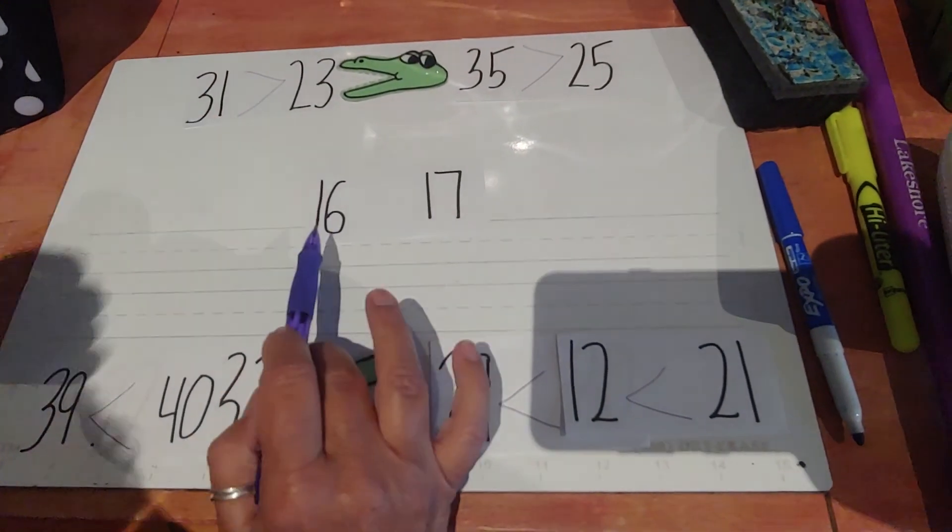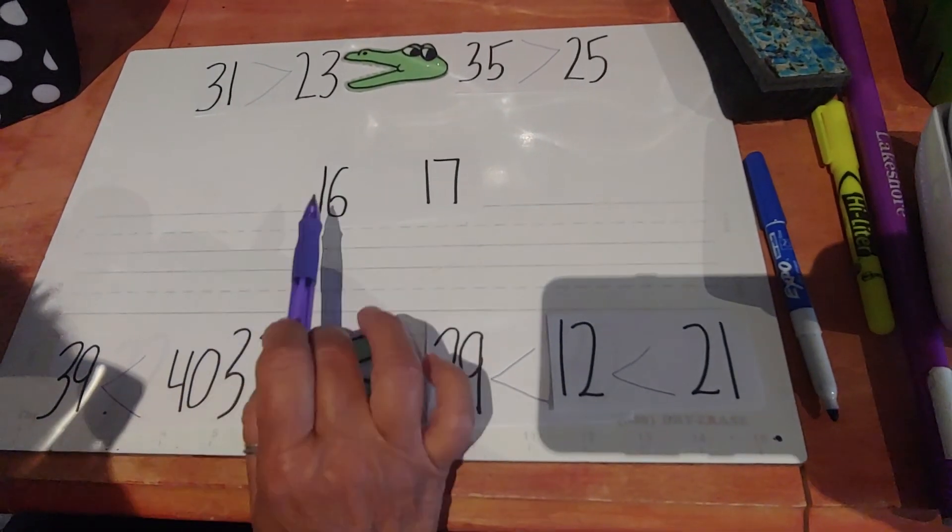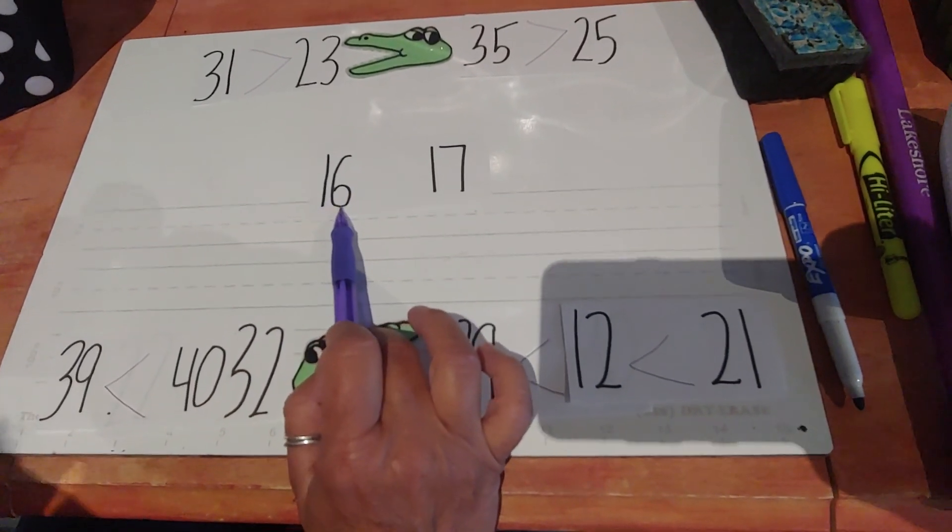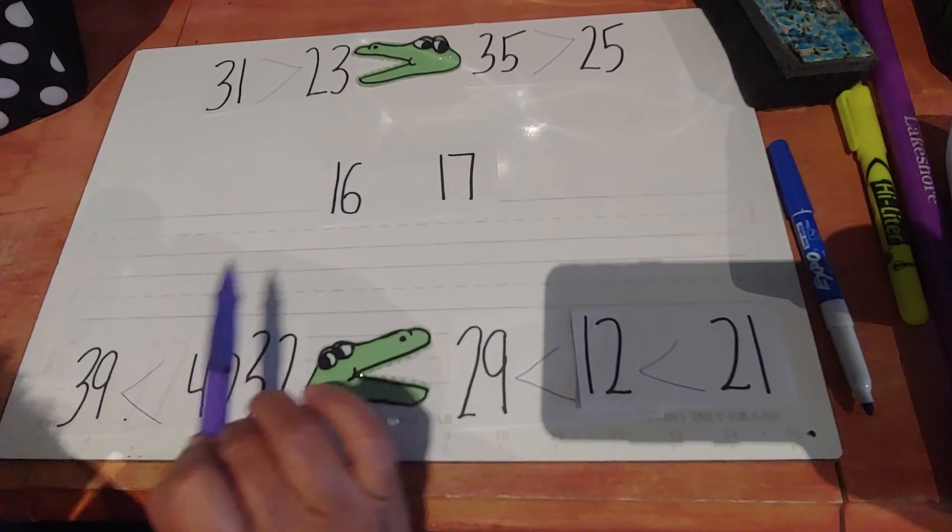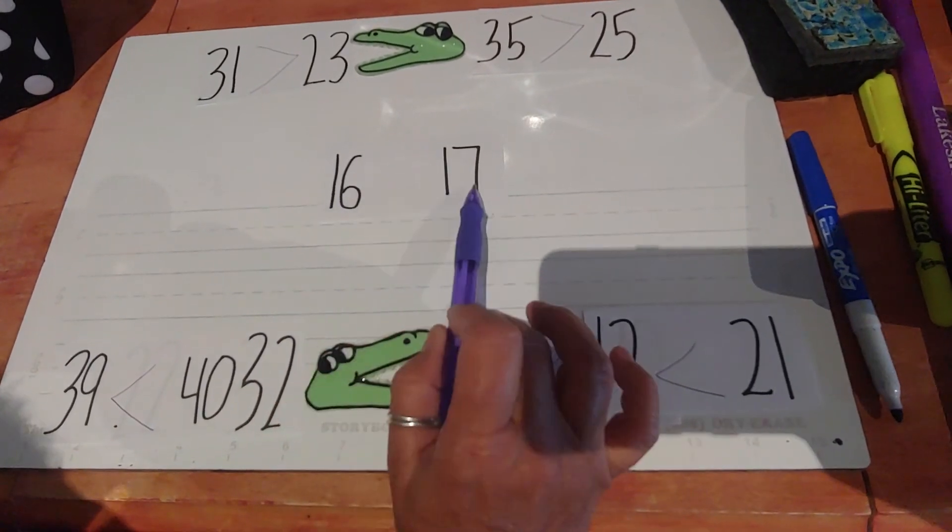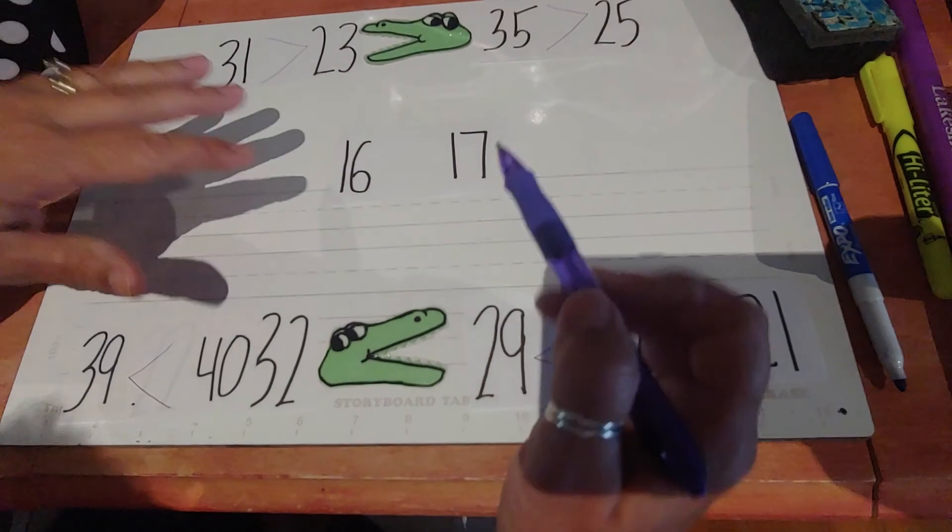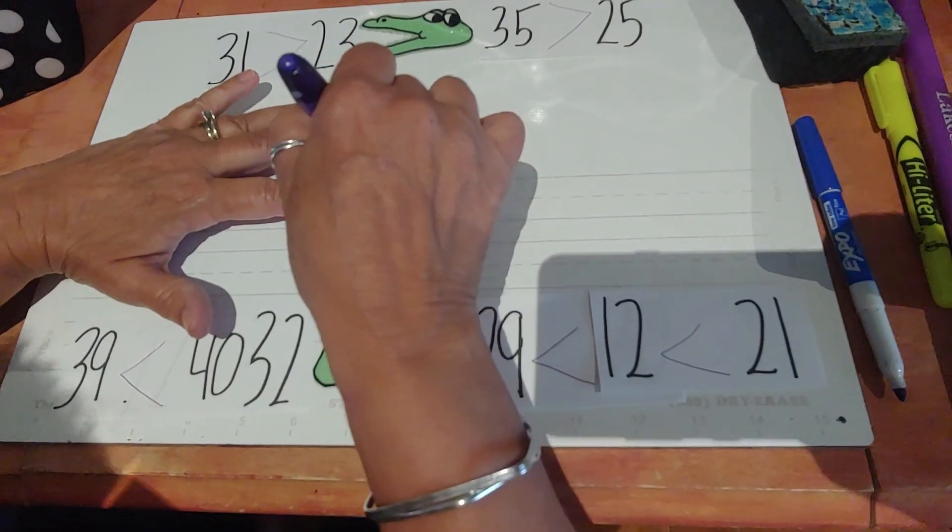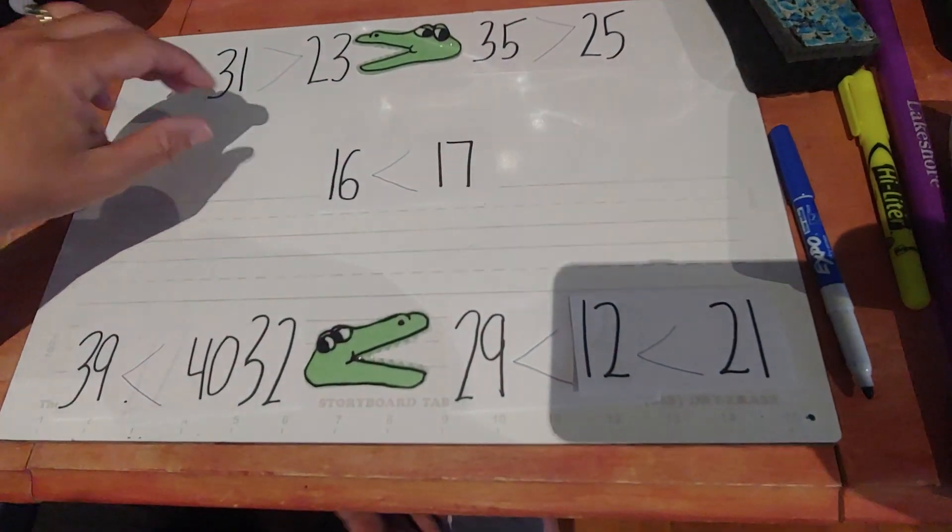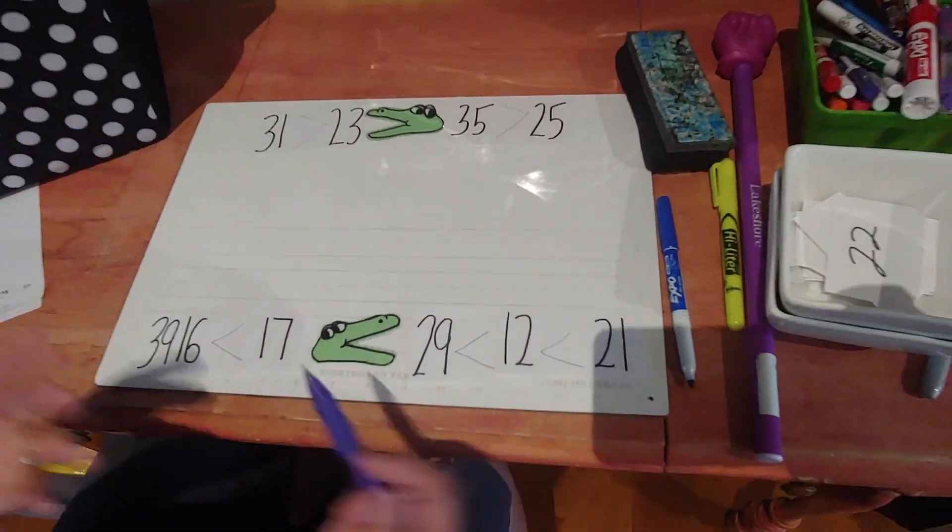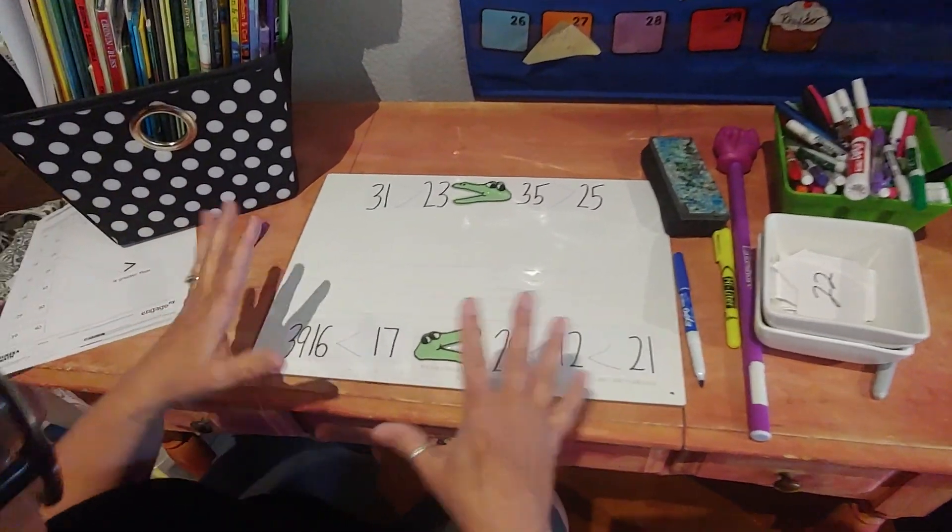And it is 16 to 17. The tens are the same. So then the deciding factor is the number in the ones place. So what is six to seven? Six is smaller than seven. It's less than. So the alligator mouth is going to go like that. And this card gets to go down here. So that's way more fun moving things around.